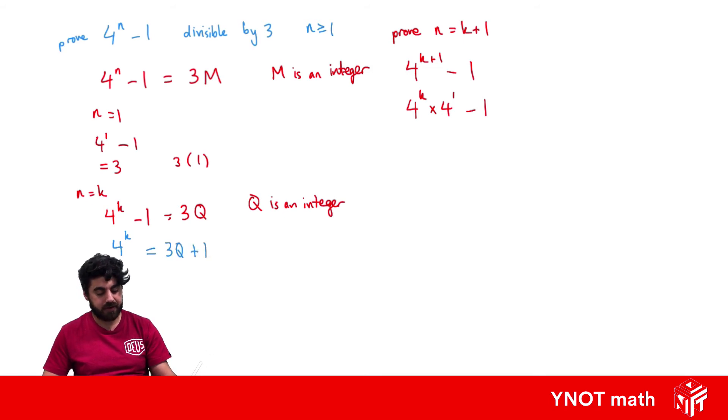We're going to go ahead and sub that in. So if we sub that in, we get 3q plus 1, all times 4 minus 1.